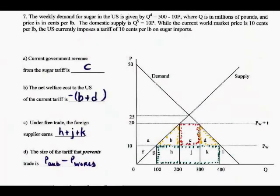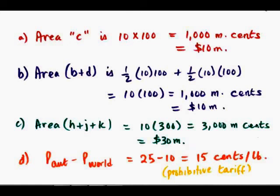Under free trade, the foreign supplier supplies 300 at a price of 10. So 300 times 10 is 3,000. 3,000 million cents or $30 million. So the foreign supplier would earn $30 million.